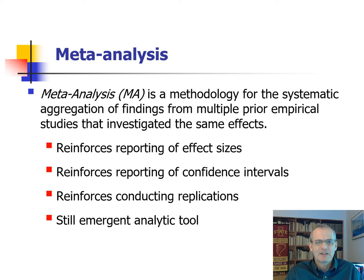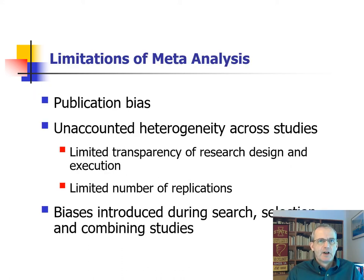Meta-analysis also reinforces the conducting of replications, which we will discuss later in this presentation. Still, meta-analysis is an emerging analytic tool, which means it also has limitations. One of these limitations is publication bias. Currently, over 90 percent of all published studies in the major journals report statistically significant effects. We know that this is an unrealistically high success rate, and hence the input into meta-analysis is likely biased.